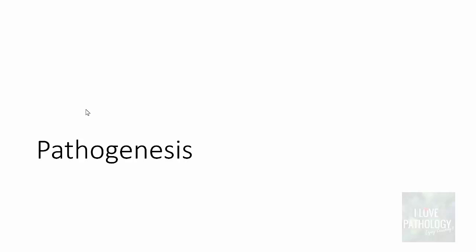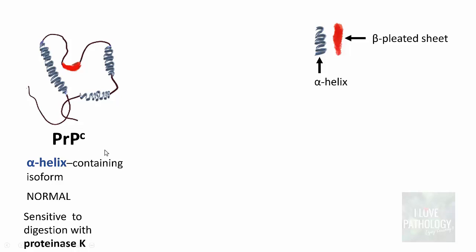Now for the pathogenesis of prion disease. The normal prion protein is called PRPC — C stands for cellular. This is a normal cellular prion protein, which is an alpha-helix-containing isoform. In the normal cellular isoform, the beta-pleated sheet component is less than five percent, so the predominant component is the alpha-helix form. Importantly, this cellular form of prion protein is sensitive to digestion with proteinase K.